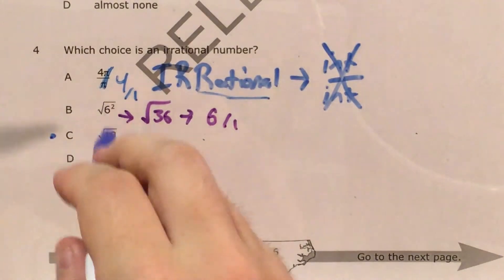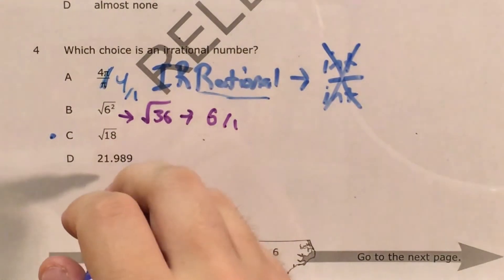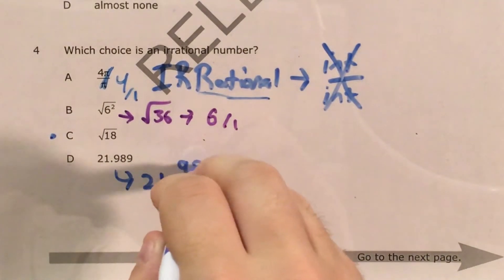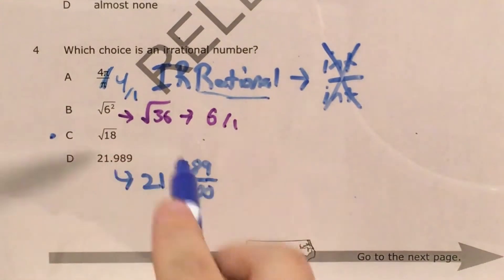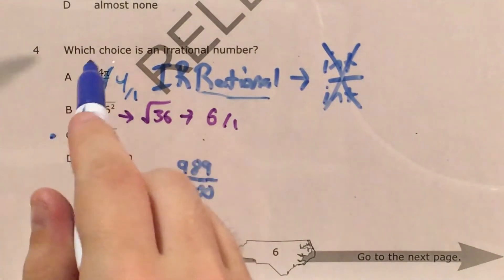Choice D, 21 and 989 thousandths. The fact that I said 989 thousandths should tell us that we can write this as 21 and 989/1000. And since this is a fraction, I actually know that choice D can be written as a fraction as well, a mixed number, but still, I'll count it.